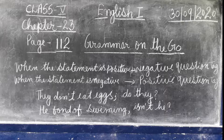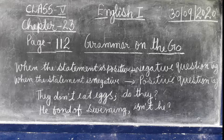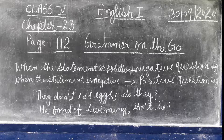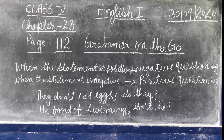'Few' suggests a very small number. It is used with countable nouns. For example: 'He had few friends in school' — you can count them on your fingers. 'There are few hotels in this town' — when you go to the market, you can count the few hotels there.